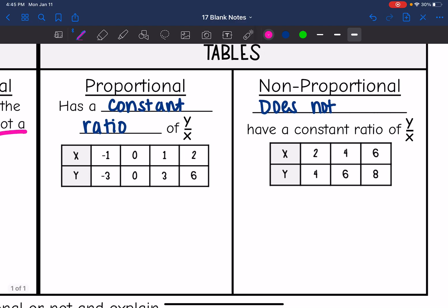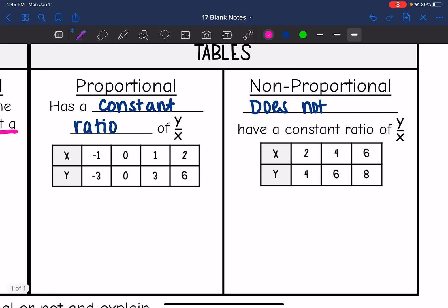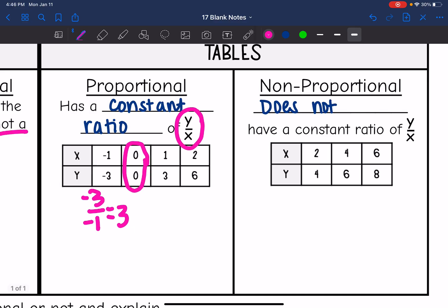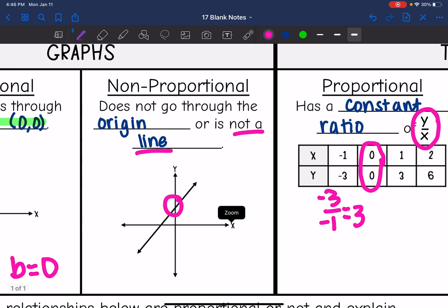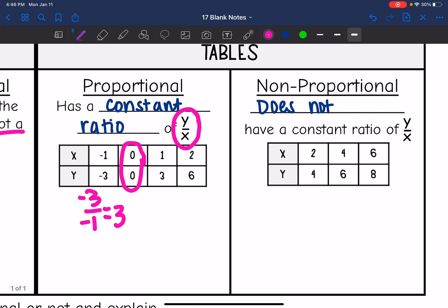Then tables, we are looking at the constant ratio. Remember, we talked about how proportional relationships have the special type of slope of y over x. So I want to see if the y over x is the same thing throughout the whole table. So y divided by x here would be 3, negative 3 divided by negative 1, which equals 3. I'm going to skip over 0, 0 because I know that a proportional relationship goes through the origin, but I'm not going to be able to do y over x with 0 over 0.